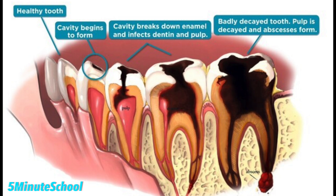When bacteria reaches the root tip area, severe pain and facial swelling can develop — this is what's called an abscess. Treatment at this stage can still be a root canal or removal of the tooth. It depends on how much tooth structure is left: if the tooth is quite broken down, extraction is often the better option, but if enough tooth remains there may be an opportunity to save it through a root canal — though it entirely depends on the dentist's assessment.